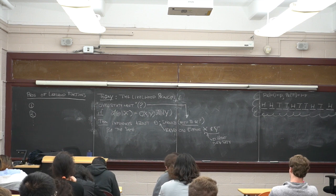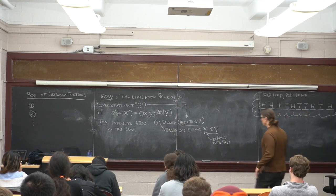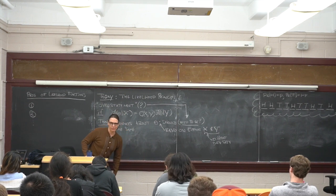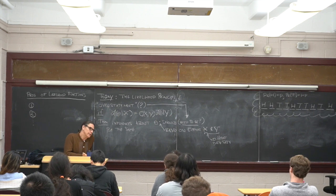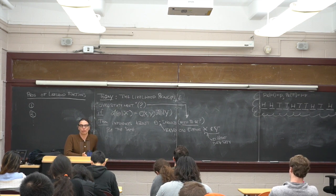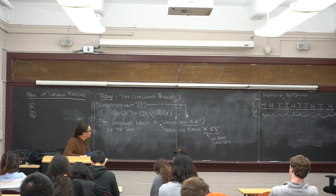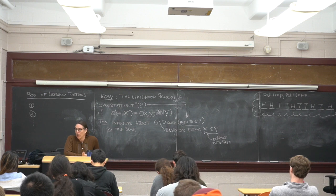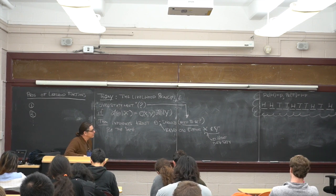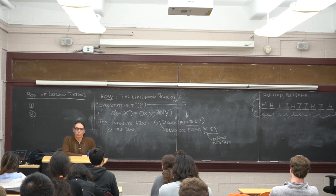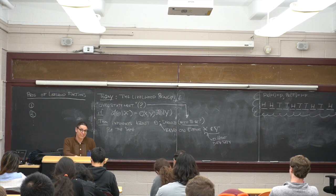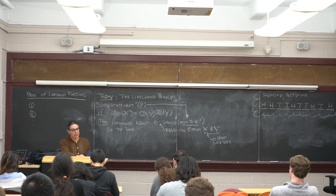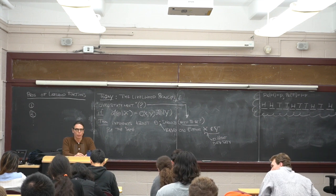Welcome back everybody. Today we're going to go over the likelihood principle. Arguing on principle alone is not a good enough thing to do — it's a guiding light, an idea. You need more substantial things than just a guiding light. The punchline is that looking at tail probabilities and averaging over them — i.e., p-values — things can go wrong. This will be our first discussion on what could go wrong with a p-value.